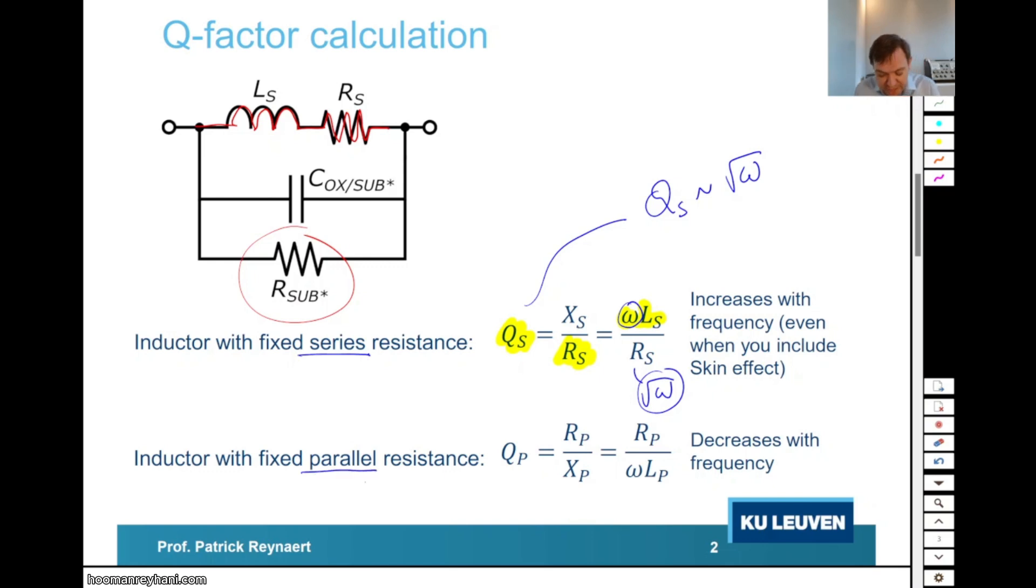If you would have an inductor with only a parallel resistance, then what is going to change? Here is my parallel resistance. I want that to be large. Ideally, an open circuit. So that's the reason why this is here on top. And then at the bottom, I have the impedance of the inductor, omega LP. So you see that this one decreases with frequency. So there is an optimum. And that optimum is quite different at RF than at millimeter wave.